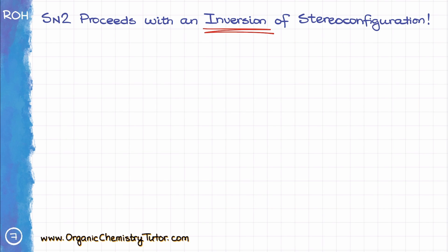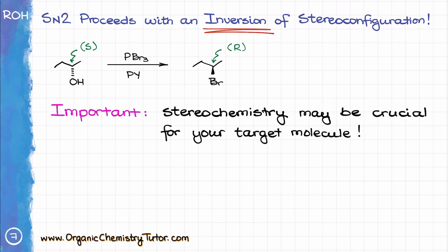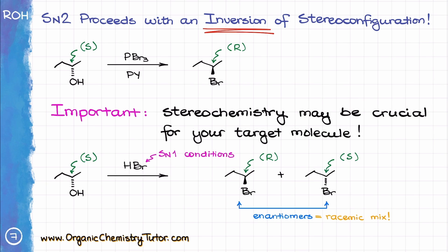Also remember that since this is an SN2-style reaction, you'll have an inversion of the stereochemistry at the alcohol position if it is chiral. So, for instance, if I treat S-butane-2-ol with PBr3 and pyridine, I will get R-2-bromobutane. Write down the mechanism for this reaction and make sure you understand how this happened and where exactly we saw the inversion of the stereoconfiguration. If you're planning a synthesis and you need a specific stereochemistry of the final product, knowing whether the reaction is going to retain, invert, or scramble the configuration into a racemic mixture will be extremely important. If I took the same S-butane-2-ol and treated it with HBr instead, this would be SN1 conditions and I would end up with the racemic mixture instead of the enantiomerically pure final product.